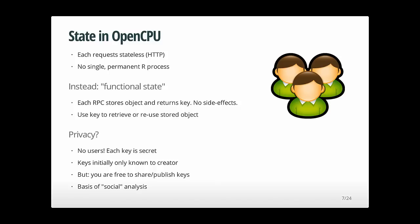We still want to build stateful applications, so OpenCPU uses an approach I call functional state. In functional programming, the output of a function depends only on its input — no side effects. OpenCPU assumes this model: each function call has no side effects because an R process performs your function call and is immediately killed. You only get the output of your function call.